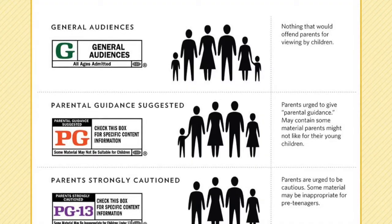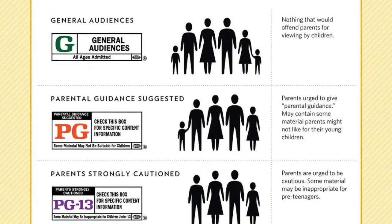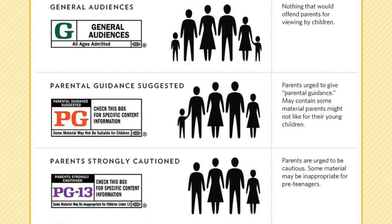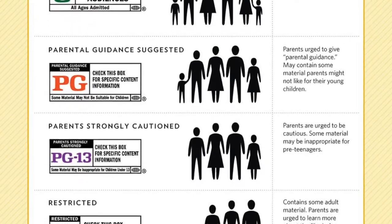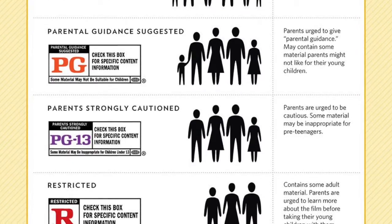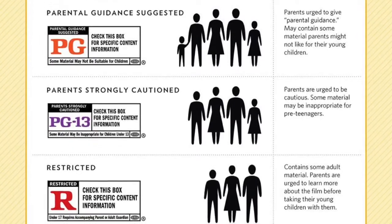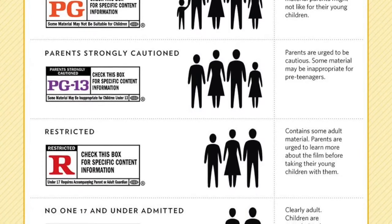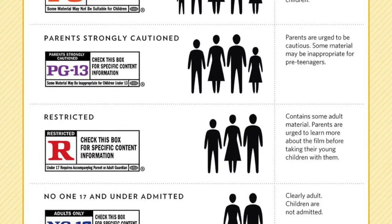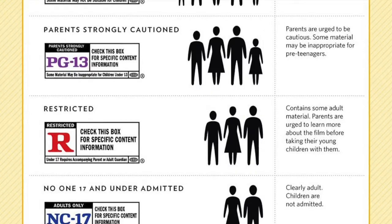This picture is an overview of the film rating system. Notice there is a very general description of each rating level. A G rating means nothing that would offend parents for viewing by children. A PG suggests parental guidance. A PG-13 strongly cautions that children under the age of 13 do not watch. R contains some adult material, while NC-17 is clearly adults only. But what constitutes material that parents would find offensive versus material they wouldn't find offensive for their children to be viewing?